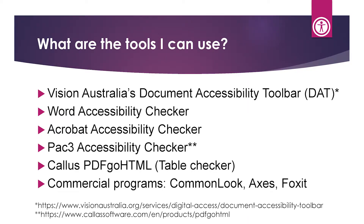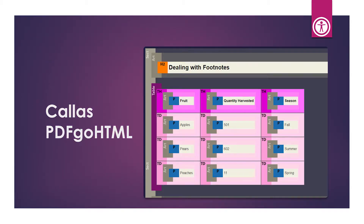Another tool is Callus PDF — pdfgoHTML — which I use to check tables. Tables can be the bane of your existence in accessibility. This free plugin generates an HTML-styled version of your PDF and clearly shows table structure. In the example shown, a table with three columns and four rows displays heading cells in a bright purple and data cells in a lighter purple, giving you a clear picture of where you might be missing a cell or when something isn't quite right.